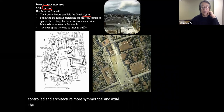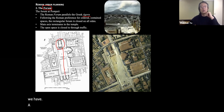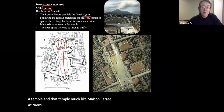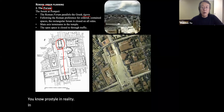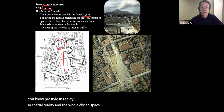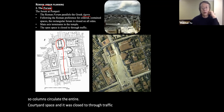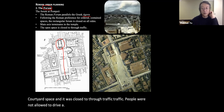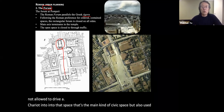The main axis of the forum terminates at a temple — much like the Maison Carrée at Nîmes in France — which is peristyle in appearance but prostyle in spatial reality. The whole closed space was enclosed by a peristyle, with columns circulating the entire courtyard. It was closed to through traffic — people were not allowed to drive a chariot into that space. It served as the main civic space and also for ceremonial purposes.